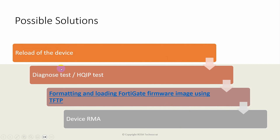The first and quickest possible solution is a reload of the device. In about 60 to 70 percent of cases, reloading the device will fix this issue. When you reload a FortiGate device, there is a disk test - similar to what you might notice on a Windows PC where an improper shutdown triggers a disk integrity check. Similarly, when rebooting a FortiGate, it can fix some corrupted blocks and may run a disk check. During reboot, most of these issues are fixed. So the first solution is a reboot or reload of the device.